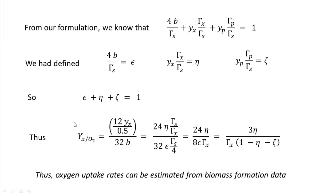3 eta by gamma_x 1 minus eta minus xi. So finally, we have gotten the yield coefficient of cells with respect to oxygen as 3 eta divided by gamma_x times 1 minus eta minus xi, in terms of all the generalized parameters for which we have some thumb rule numbers. Therefore, oxygen uptake rates can be estimated from biomass formation data. We already know gamma_x, eta and xi. You can look into the literature to find some estimates. With that, we come to the end of this lecture. When we meet in the next lecture, we will take module 5 forward. See you there.